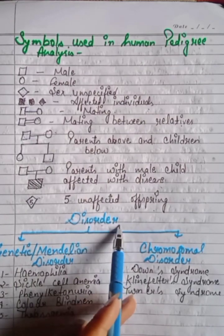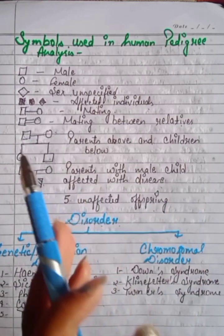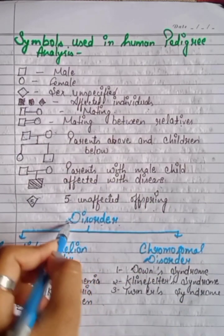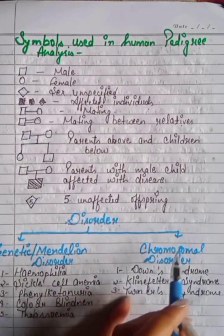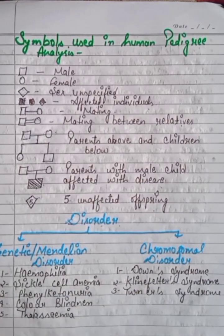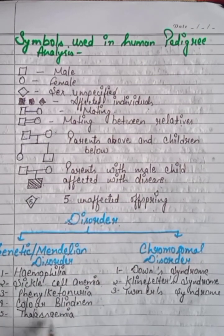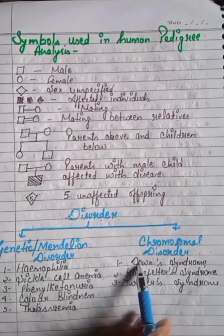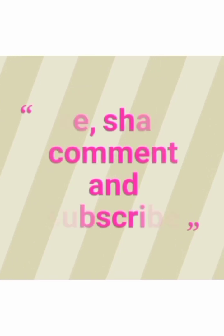There are two types of genetic disorders: Mendelian disorders — including hemophilia, sickle cell anemia, phenylketonuria, color blindness, and thalassemia — and chromosomal disorders — including Down syndrome, Klinefelter's syndrome, and Turner's syndrome.